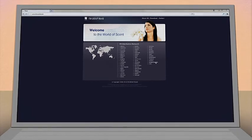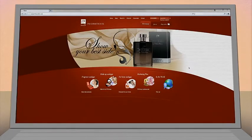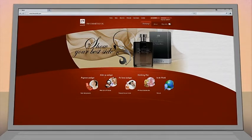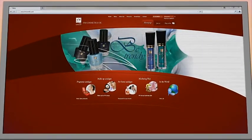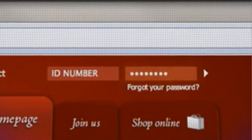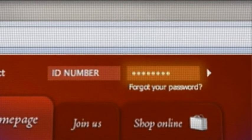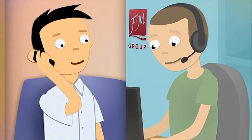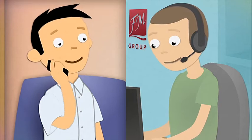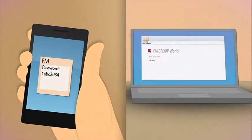There you can find the website address of your FM Group affiliate, as well as useful information concerning our products, events, and motivational programs. In order to get access to them, however, you will need an individual password. Contact your local affiliate, who will guide you through the registration process. The password will be sent on your mobile phone or to your email.